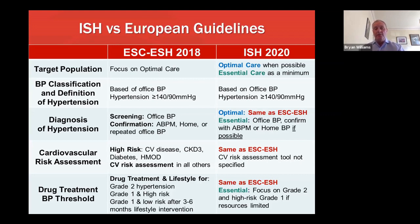In the optimal care group in both guidelines, grade one hypertension at low risk should be monitored with lifestyle intervention for three to six months, and then treatment initiated if blood pressure isn't controlled — this is the same for both guidelines. In the ISH guideline, they also specify that in essential care settings, in other words in low resource settings where this may not be possible, the focus should be on ensuring people with grade two hypertension are treated, or high risk grade one if resources are limited.